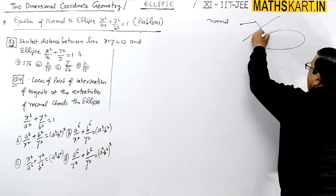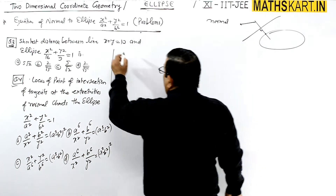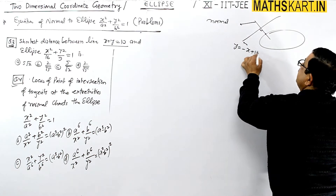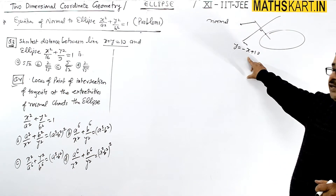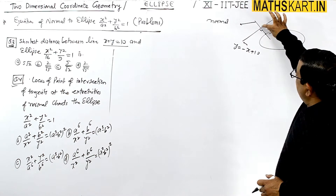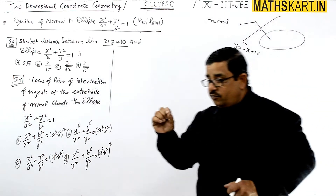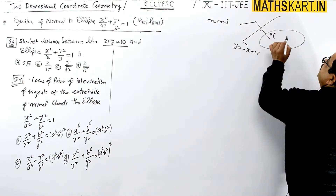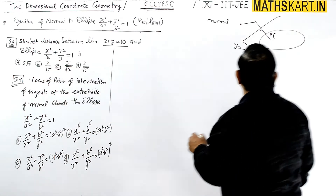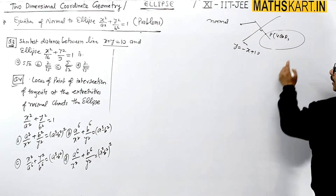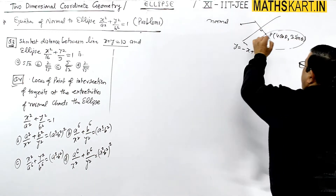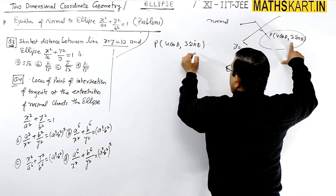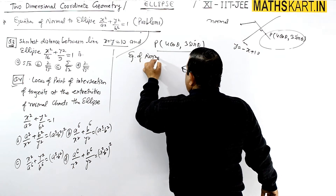Before that, let's look at the ellipse. The given line equation is y = -x + 10, so the slope of the line is -1. We need to find the shortest distance, so we need to find the point on the normal, and from that point find the perpendicular distance. We'll take any point P on the ellipse as (a cosθ, b sinθ). Since a = 4, P = (4cosθ, 3sinθ).